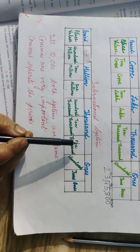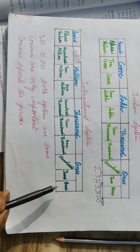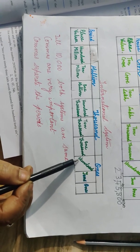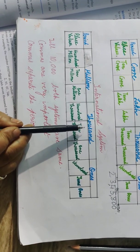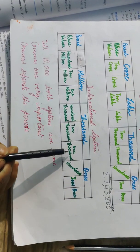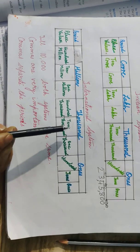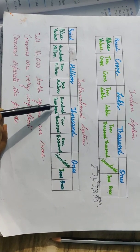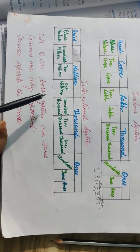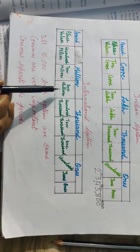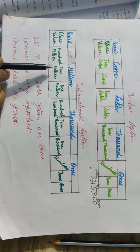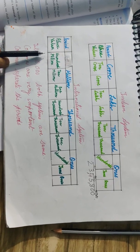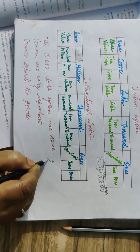In the International system, the ones period again has three places: ones, tens, and hundreds. But the thousands period also has three places: one thousand, ten thousand, and hundred thousand. This is how it differs from the Indian system. The million period has three places: one million, ten million, and hundred million.